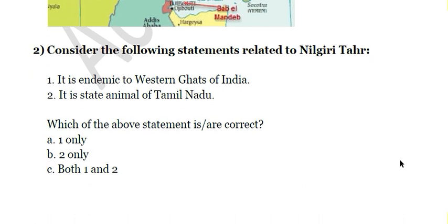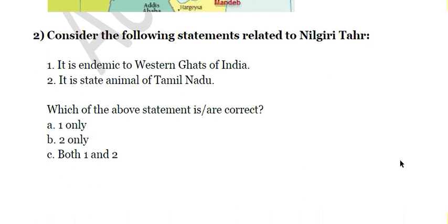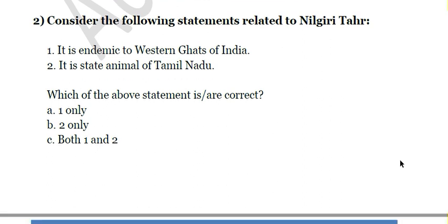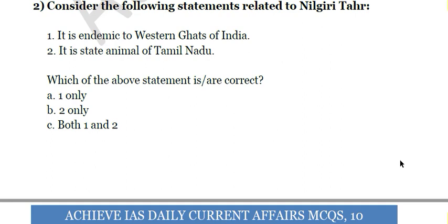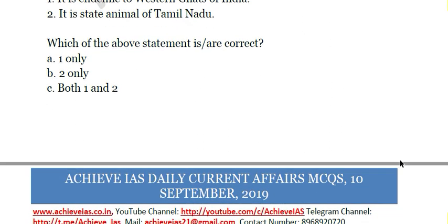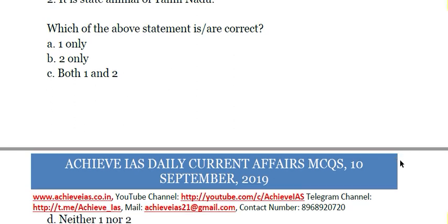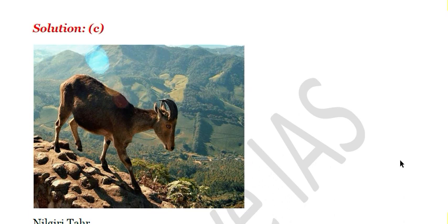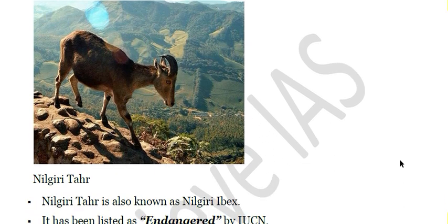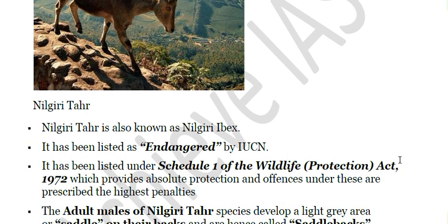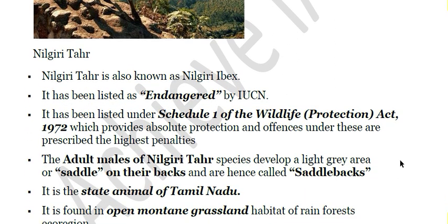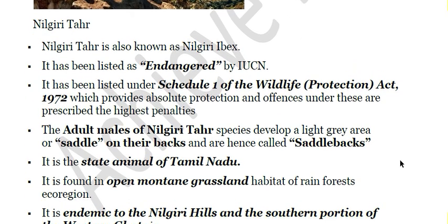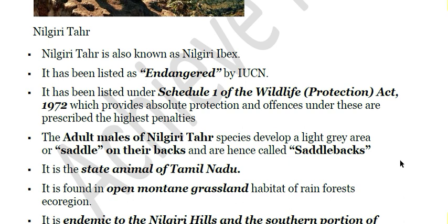The second question: Consider the following statements related to Nilgiri Tahr. First, it is endemic to the Western Ghats of India. Second, it is the state animal of Tamil Nadu. Both statements are correct. It is listed as endangered and protected under Schedule One of the Wildlife Protection Act, which provides absolute protection with the highest penalties for offenses.